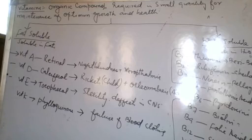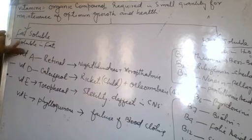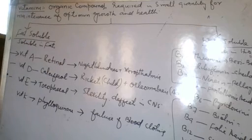As far as classification is concerned, vitamins have been divided into two main classes on the basis of their solubility. If they are soluble in fats, we call them fat-soluble vitamins, and if they are soluble in water, we call them water-soluble vitamins.